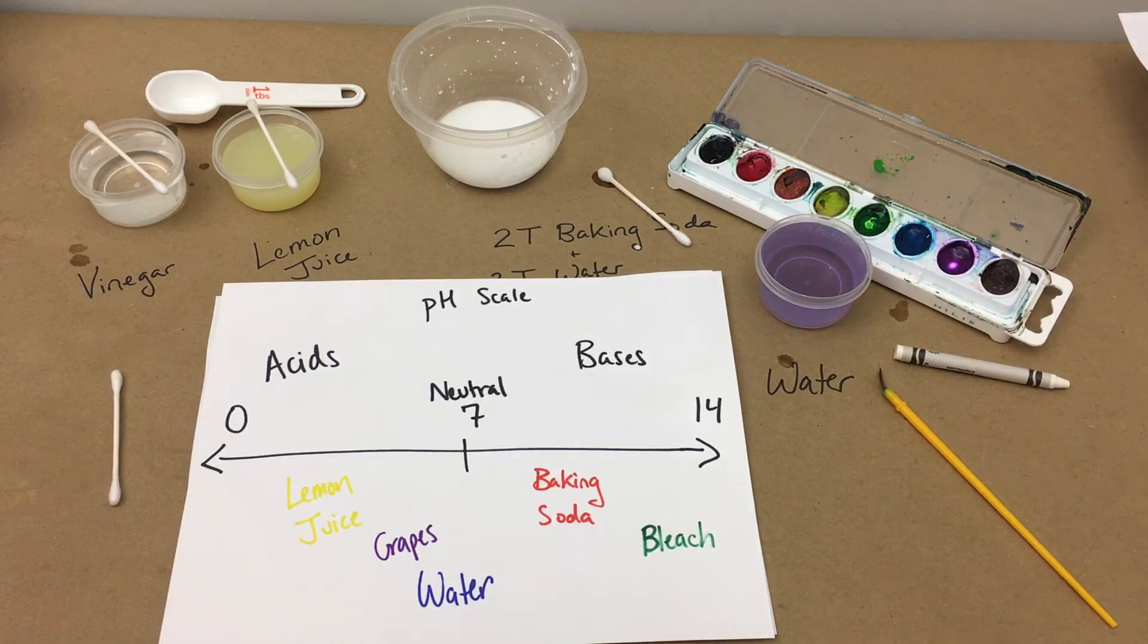In order to reveal our message we wrote with baking soda and water, we need to talk a little bit about the pH scale. As shown here, it runs from 0 to 14, with acids such as lemon juice and grape juice being nearer to 0, neutrals such as water being near 7, and bases or alkalines like baking soda and bleach being near 14.